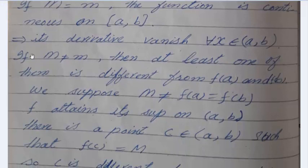The second is if M ≠ m, then at least one of them is different from f(a) and f(b). We suppose M is not equal to f(a) and f(b). As given in the statement, f(a) = f(b).